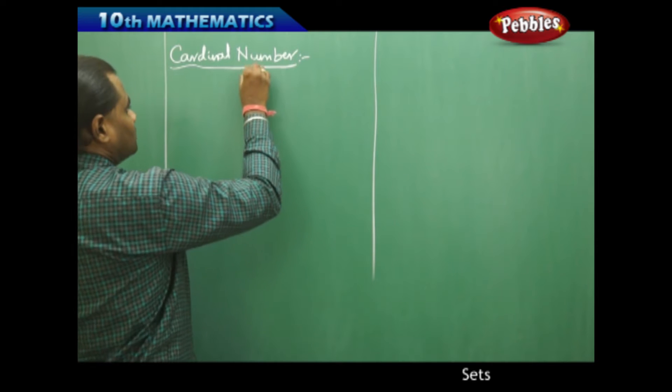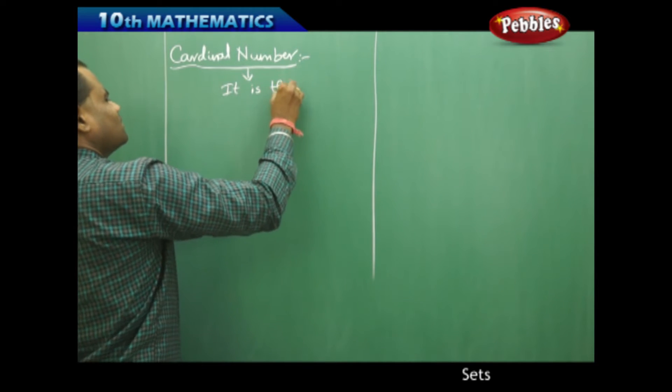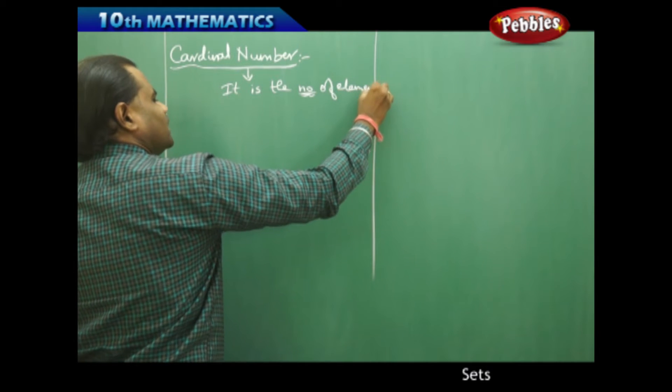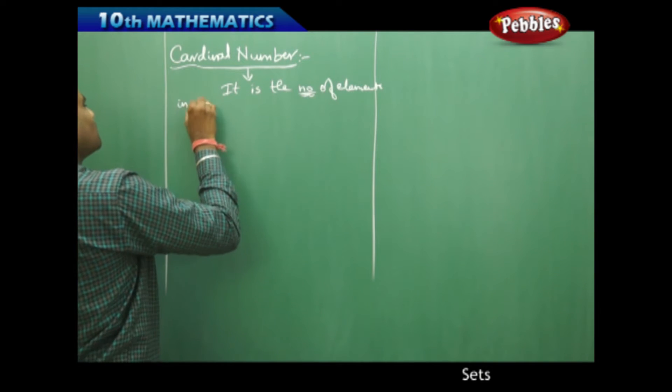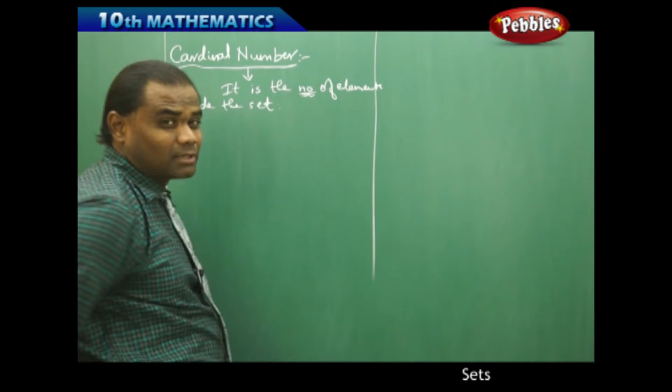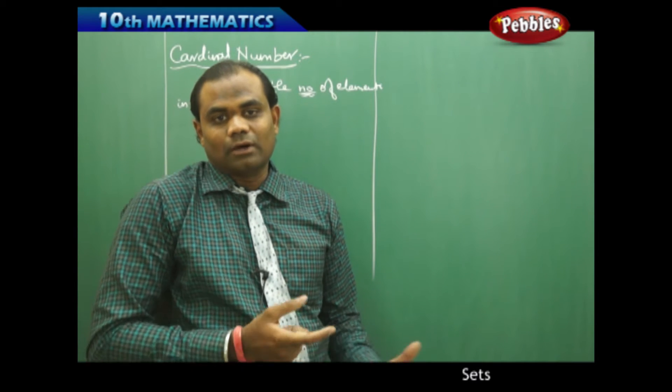A cardinal number is nothing but the number of elements inside the set. So cardinal number is the number of elements inside the set when you count them.